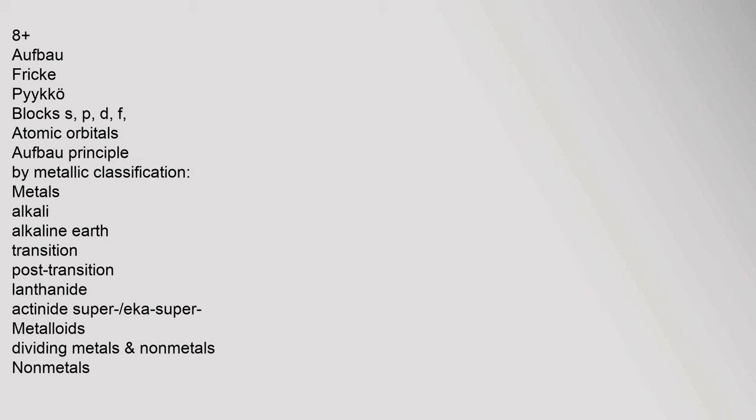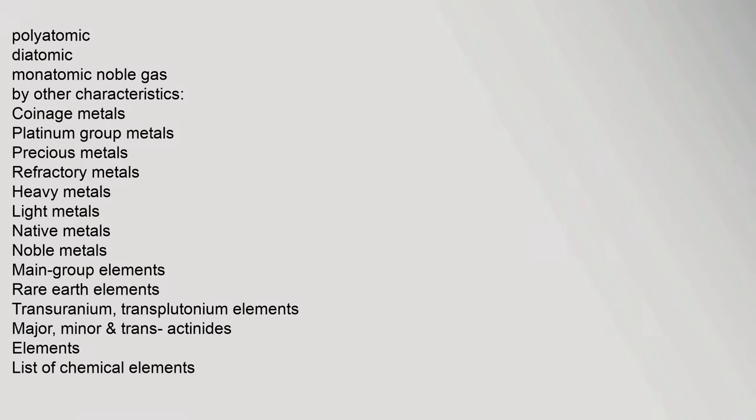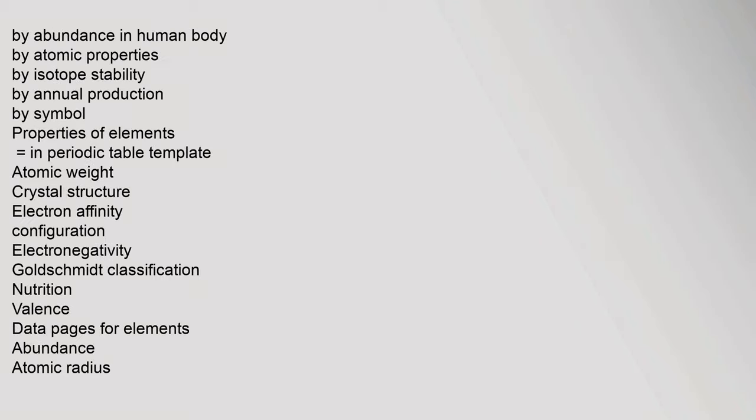Metals include Alkali, Alkaline Earth, Transition, Post-Transition, Lanthanide, Actinide, and Supermetalloids. Classifications also include polyatomic, diatomic, and monatomic noble gas types, as well as coinage metals, platinum group metals, precious metals, refractory metals, heavy metals, light metals, native metals, noble metals, main group elements, rare earth elements, transuranium and transplutonium elements, by abundance in human body, atomic properties, isotope stability, annual production, and symbol properties.